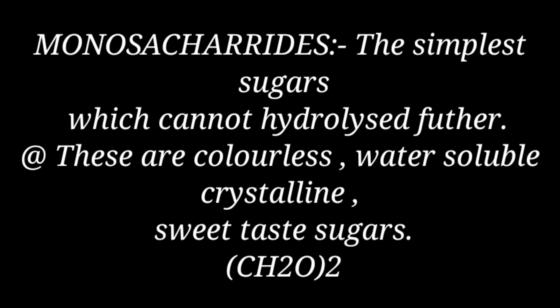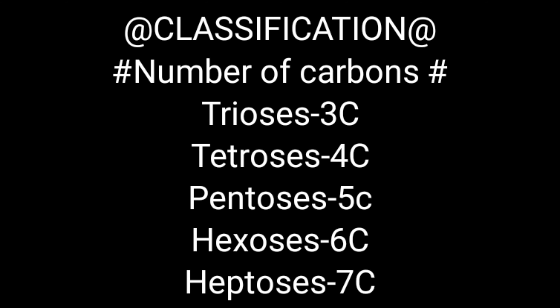Monosaccharides have a sweet taste, and the main chemical formula is (CH₂O)n. Now, the classification of monosaccharides: they are mainly classified depending upon the number of carbons. For example, trioses have three carbons, tetroses have four carbons, pentoses have five carbons, hexoses have six carbons.